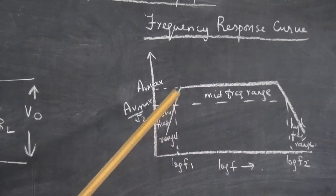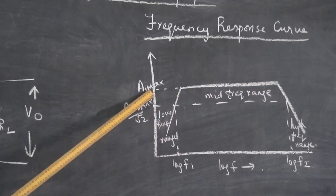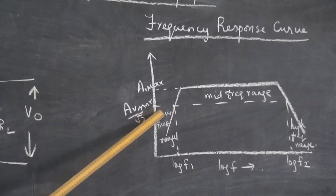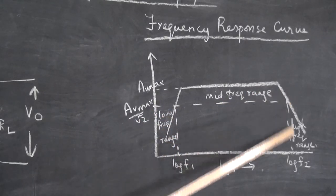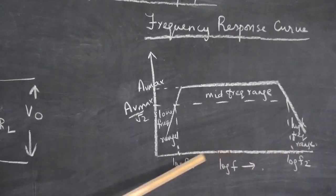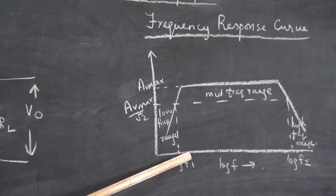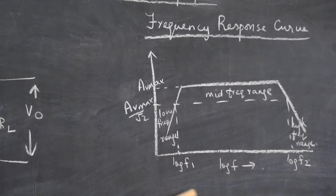Now this is the maximum value of the gain. We call it AV max. At 1 by root 2 of the maximum gain, we can see we get two points: log F1 and log F2, from which we can calculate F1 and F2. The difference between F2 minus F1 is called the bandwidth of the amplifier. A good amplifier should have as large a bandwidth as possible.